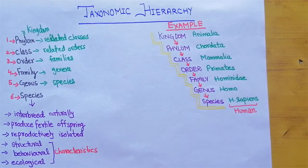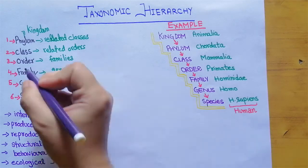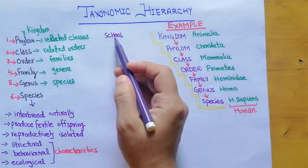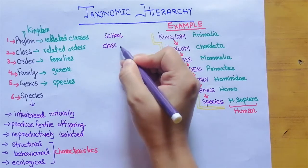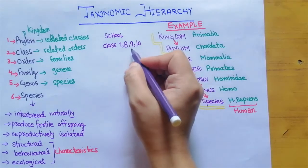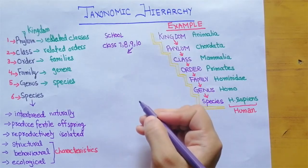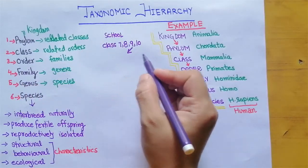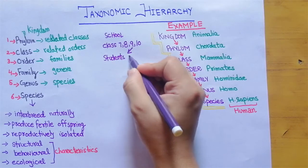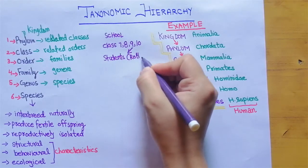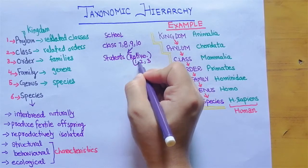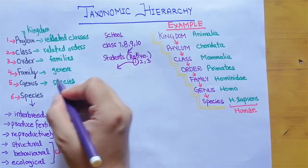Let's take an example from daily life. Think of phylum as a school. In the school we have different classes — class seven, eight, nine, ten. Let's take one class. Within that class, we have order — meaning all students are arranged according to their roll numbers. Let's take roll number one — that roll number one represents a family.